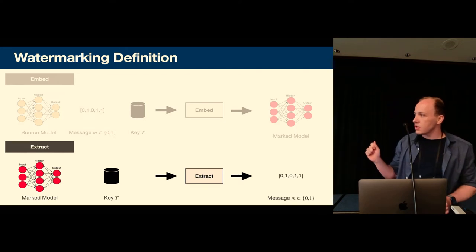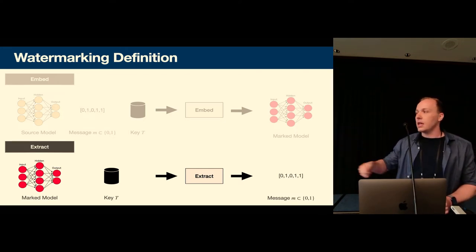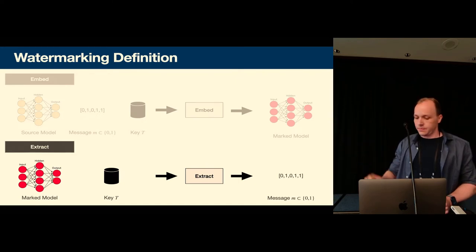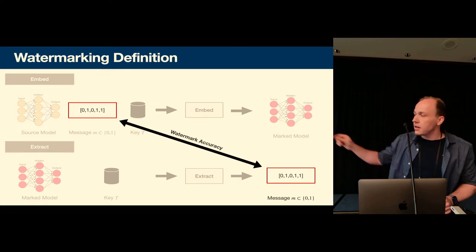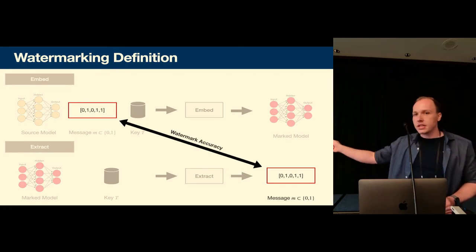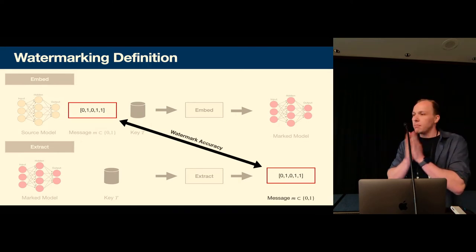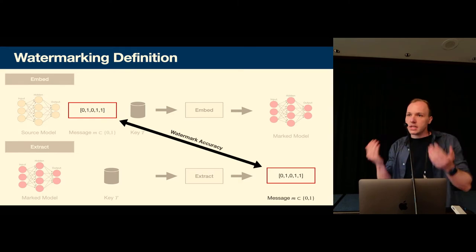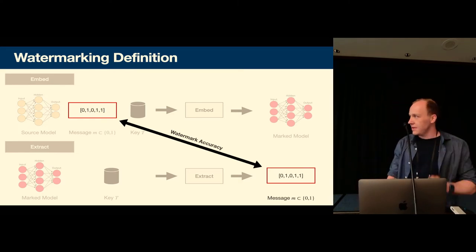So this marked model then contains a message that can be extracted via the extraction function. So in the extraction function it takes as an input the marked model and the watermarking key and it outputs the message. And there's a simple verification process where we speak of the watermark accuracy which verifies if our extracted message and our embedded message if they match. If they match up to a certain degree we say that this model was stolen and this was our model and check if it was maybe misused.